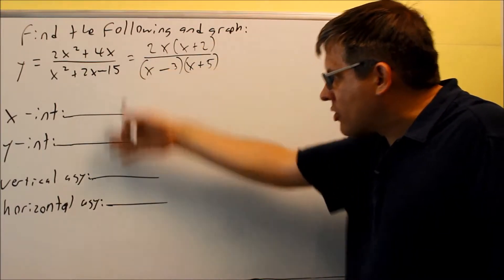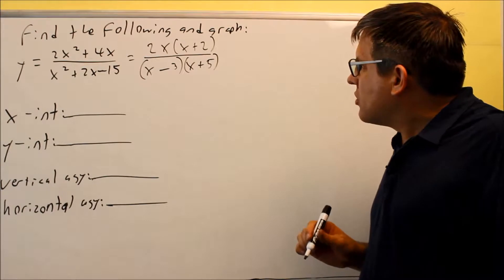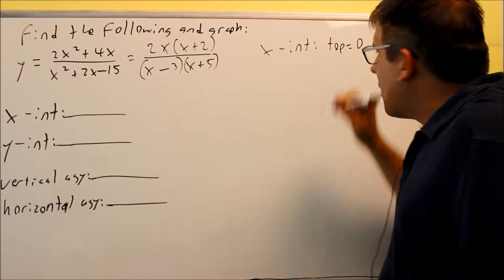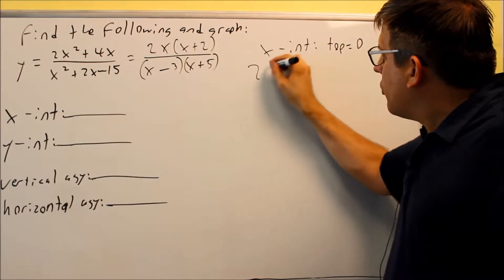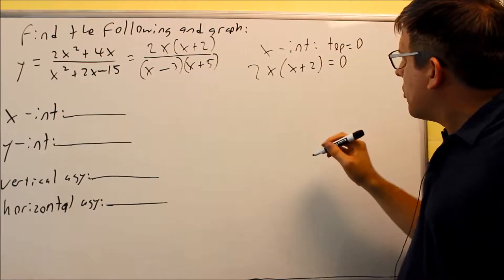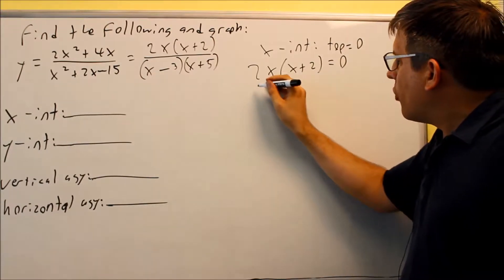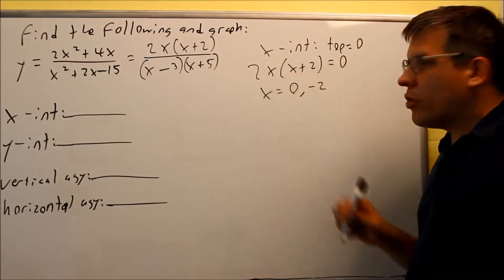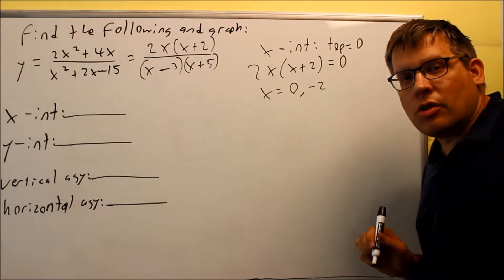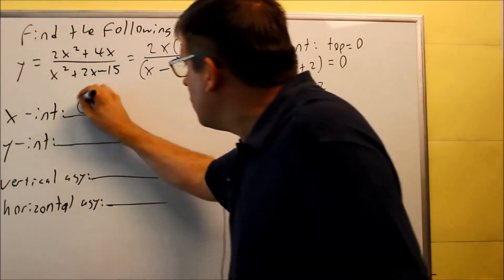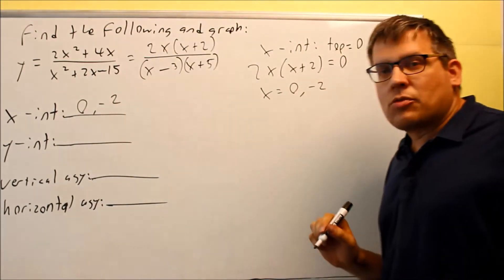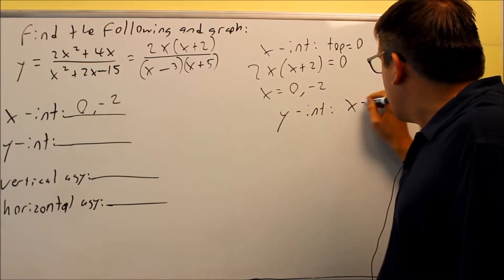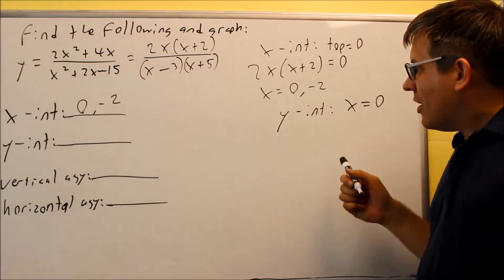Nothing cancels, so we move on. First we find the x-intercepts: set the top equal to zero. We have 2x times (x plus 2) equals zero, and solving gives x equals zero and x equals negative 2. Those are your two x-intercepts.